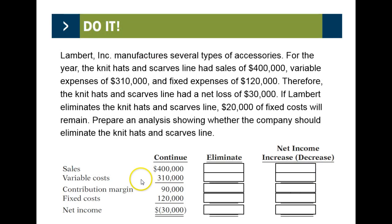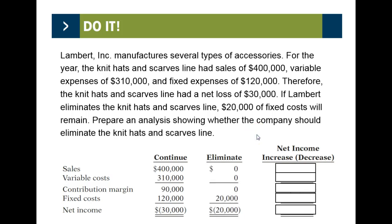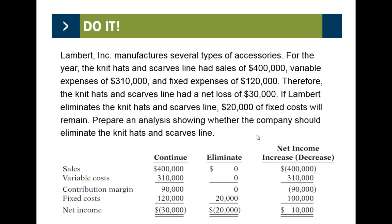Lambert manufactures accessories. The knit hats and scarves line has sales of $400,000, variable expenses of $310,000, and fixed expenses of $120,000 — a loss of $30,000. If Lambert eliminates knit hats and scarves, $20,000 of fixed costs remain. After analysis, we should eliminate the line — we'll have a loss either way, but the remaining loss is smaller.